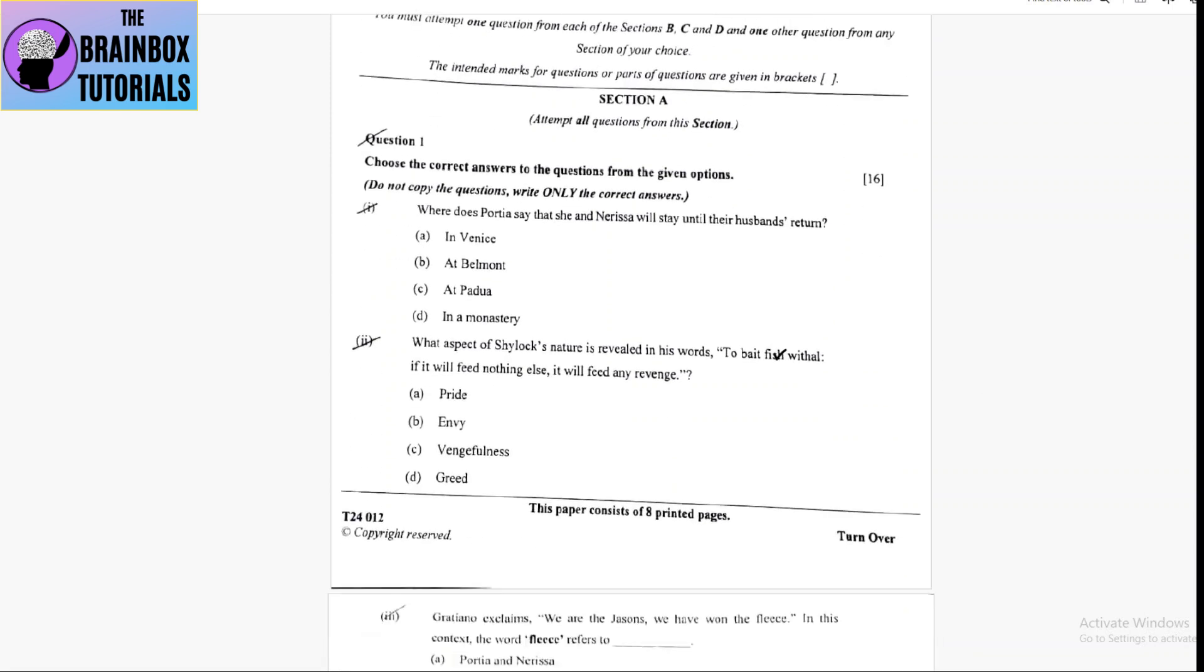Question number 1, where does Portia say that she and Nerissa will stay until their husbands return? In Venice, at Belmont, at Padua in a monastery. She says that they are going to monastery till their husbands return.